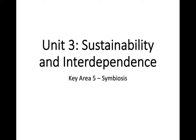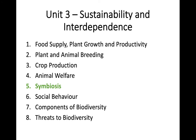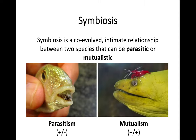Hi everyone, welcome back to Higher Biology. We're still going on with Unit 3, Sustainability and Interdependence. And today we're going on to Key Area 5, called Symbiosis. Like some of our previous Key Areas, this one isn't too long. But we're going to be looking at different types of relationships between organisms, in terms of parasites and mutualistic relationships, and comparing what those both are.